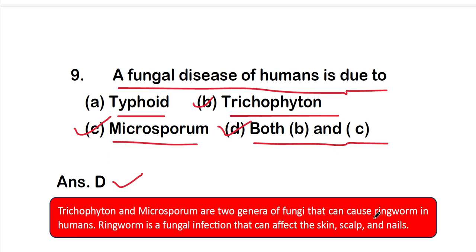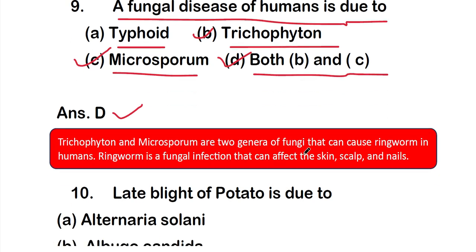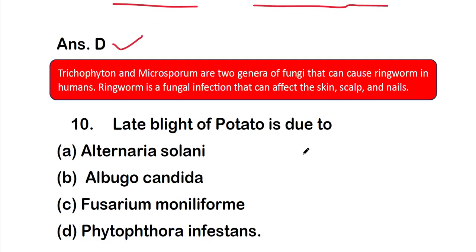Trichophyton and Microsporum are two genera of fungi that can cause ringworm in humans. Ringworm is a fungal infection that can affect the skin, scalp, and nails.